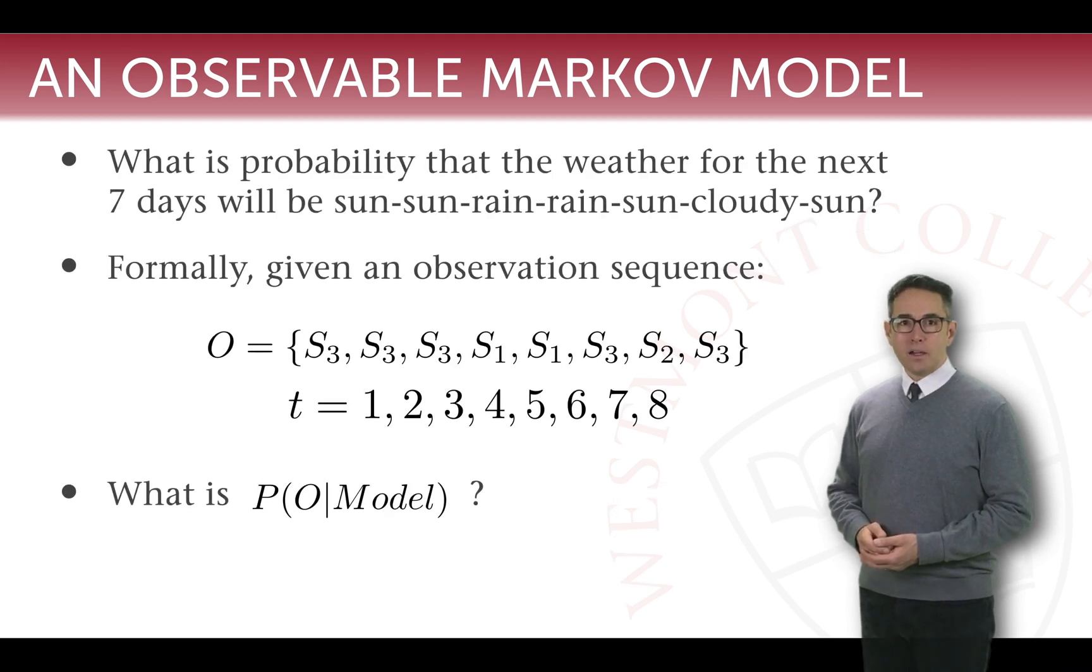Formally, we can describe this as a set of observations that has eight positions in it because we're assuming part of our observations is that we're starting in a sunny state, S3. As we look at these observations, we read them from left to right. Keeping track of order and dependence is important when you look at the notation for Markov models. The observations are S3, S3, S3, S1, S1, S3, S2, S3.